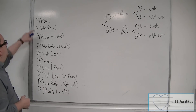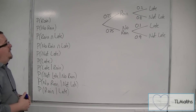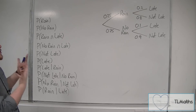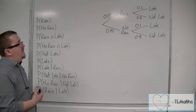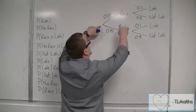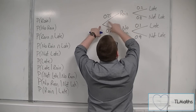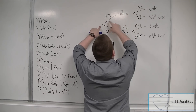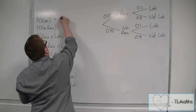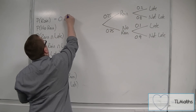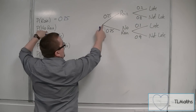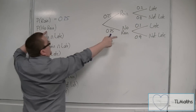The first one is the probability that it rains. We can read this directly from the tree diagram — the probability that it rains is 0.25. And the probability that it doesn't rain, we can also see that directly: it's 0.75.